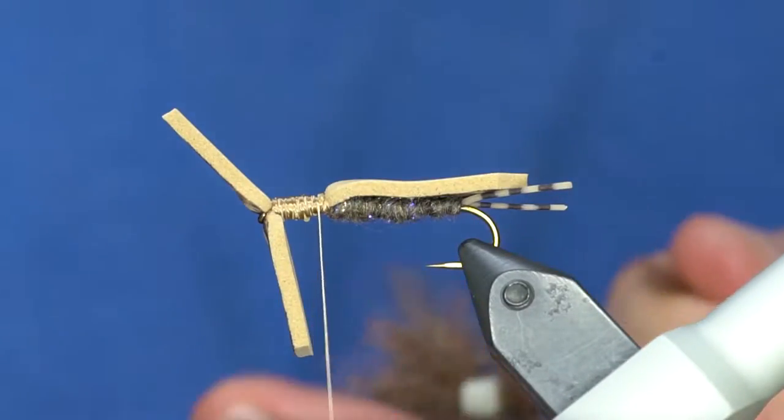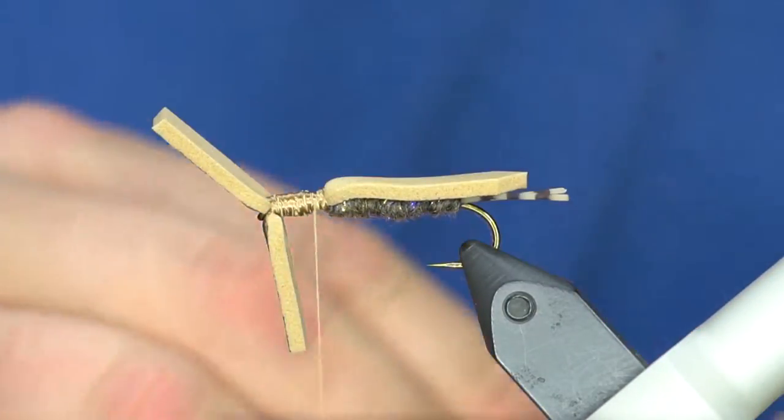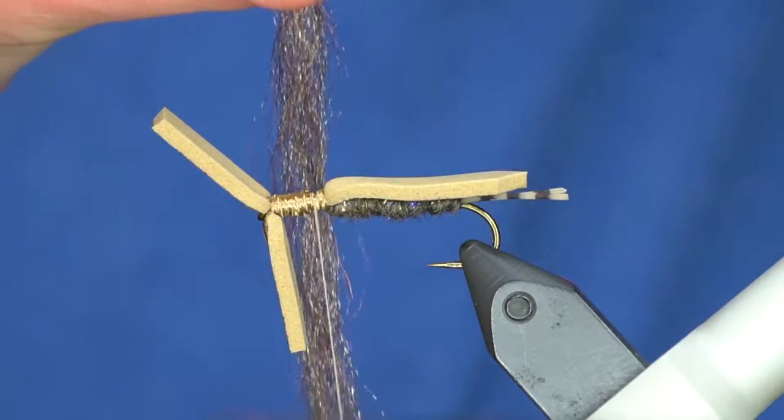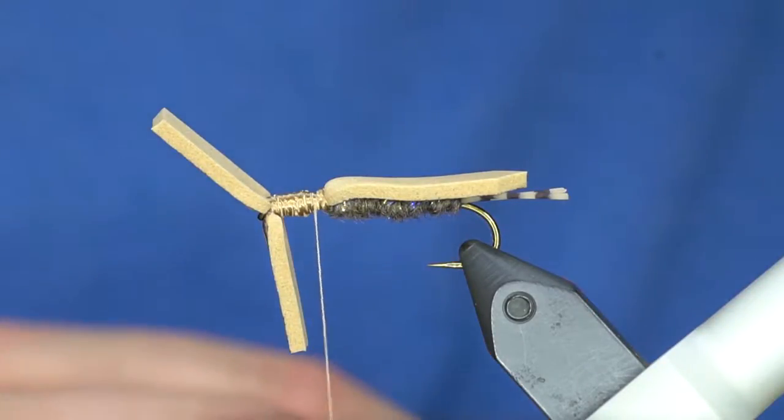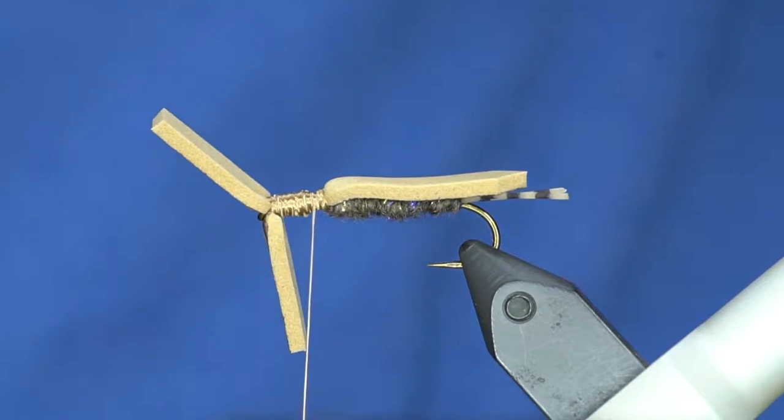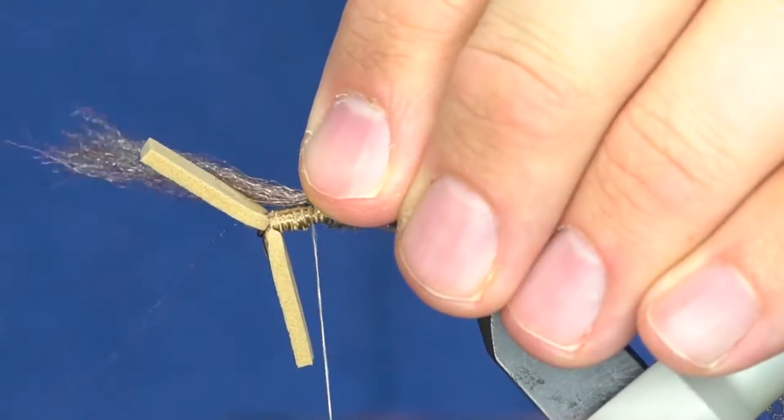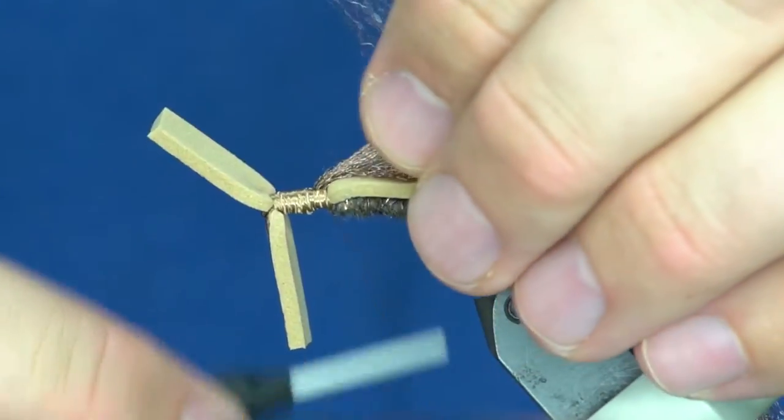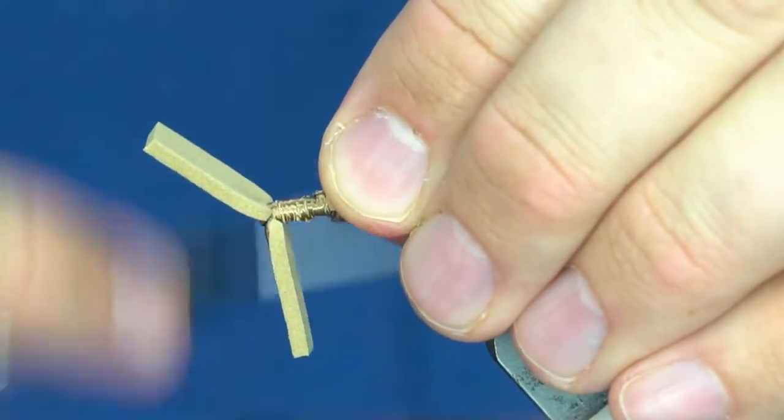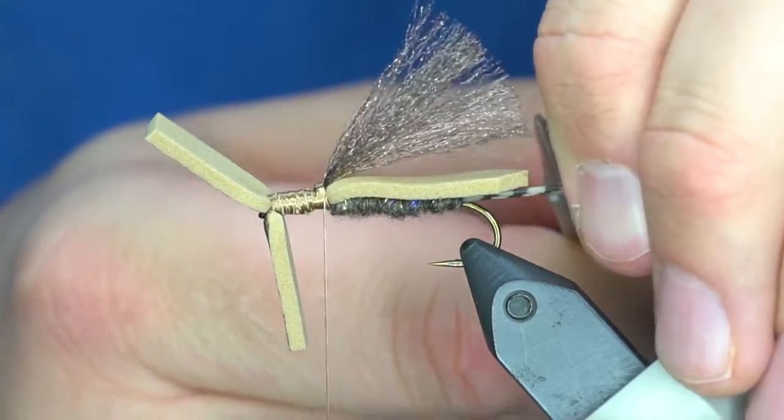Before I do that, the old pattern called for deer hair that I would tie in over the wing, but I've switched that out to EP trigger point fibers. They're just a little bit easier, you can tie them quicker. This is the March brown color, I think it's dark March brown. I'm going to tie that in and double it over itself so the wing can't pull out. I'm going to pull that and trim it just a little bit longer than the body.